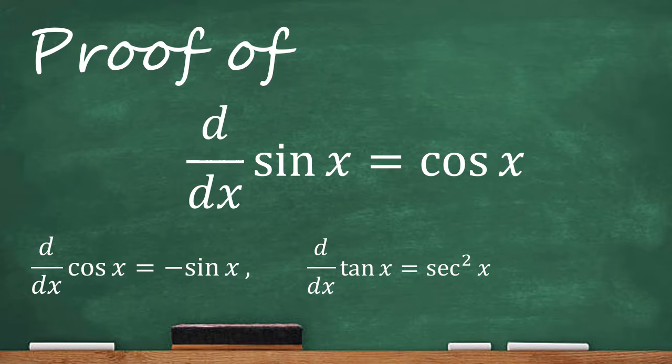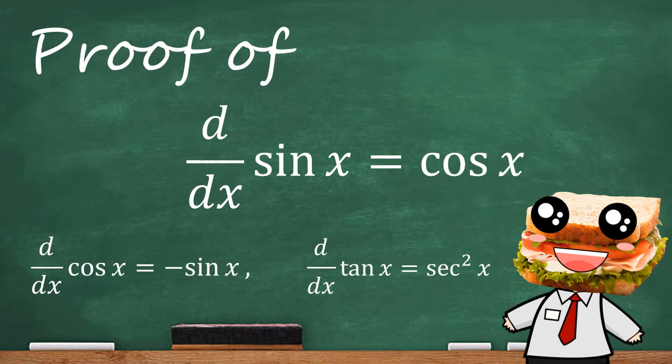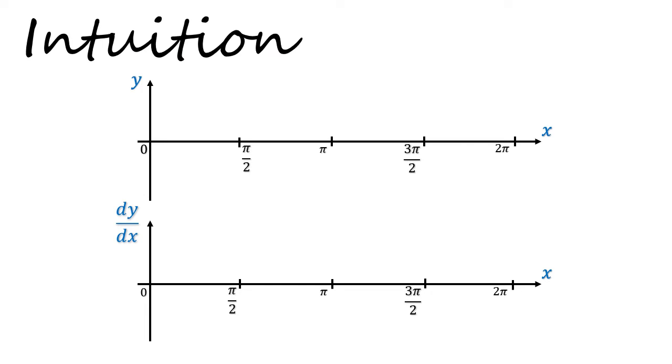Let us also welcome Sandwich Sensei, who will be helping us with this proof. Now let's begin with some intuition of why cosine would be the natural answer to the derivative of sine. And we can approach this graphically for one period of the sine graph from 0 to 2π.